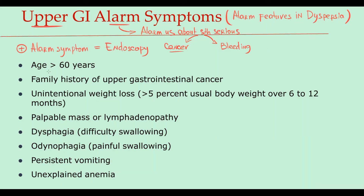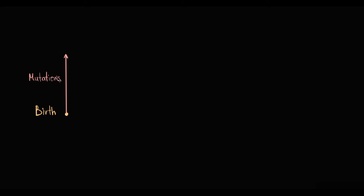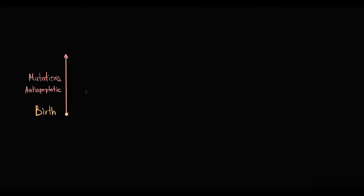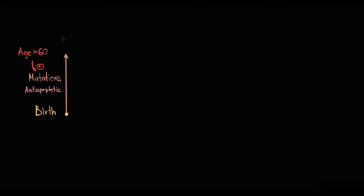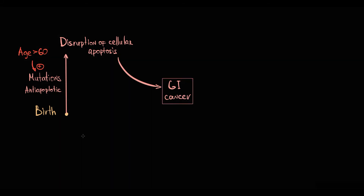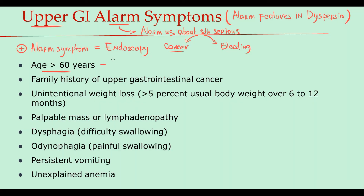If we have a patient that is older than 60, we will refer him for an endoscopy straight away. The logic here is that from the moment of birth, our organism tends to acquire mutations. Some mutations have a positive impact, but most have a negative impact. For example, some mutations can disrupt cell apoptosis — such mutations are called anti-apoptotic mutations. Generally, the longer we live, the more mutations we acquire. So with age the mutations accumulate, and at some point anti-apoptotic mutations can disrupt cell apoptosis, and disruption of apoptosis is a crucial event in oncogenesis that results in formation of GI cancer. So generally, the older the age, the higher the risk of cancer.